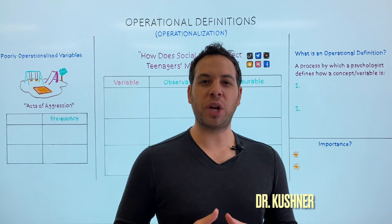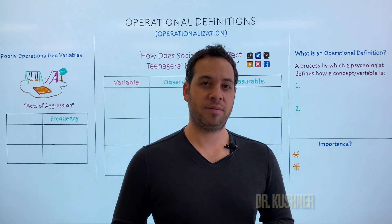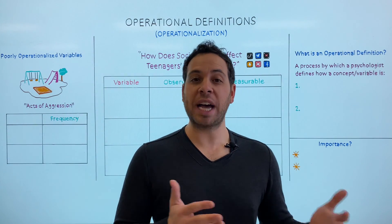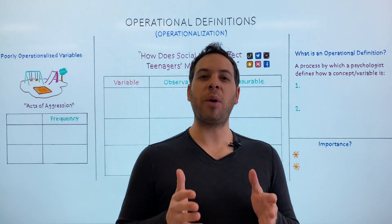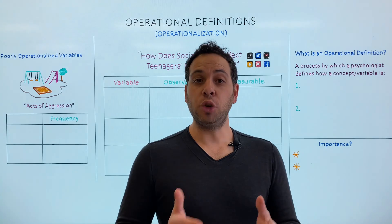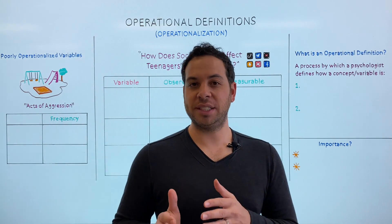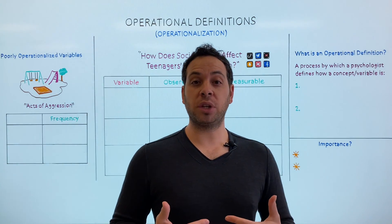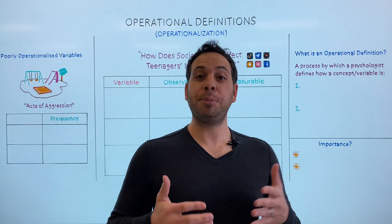If you wanted to observe and measure how much people weigh, you could use a scale to collect data. And if you wanted to observe and measure how fast people are, you could use a timer to collect data. But what if you wanted to observe and measure how happy people are, how anxious people are, how bored people are, or how much pain people are in?